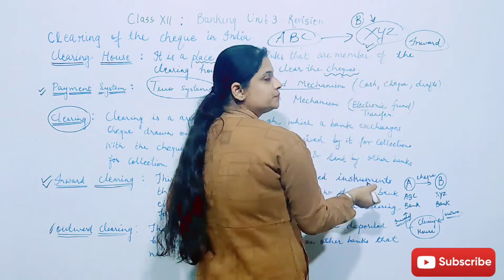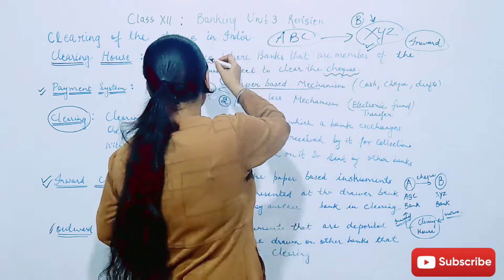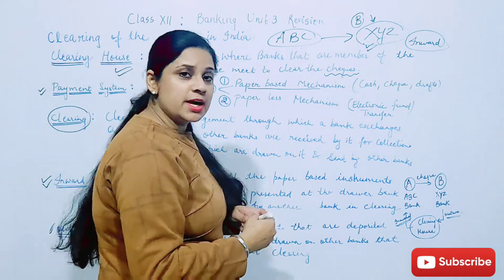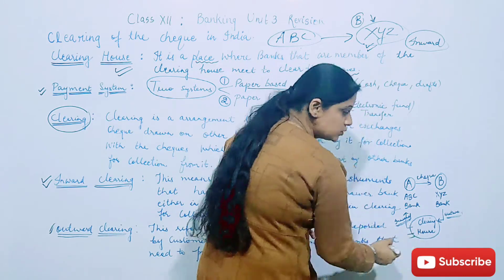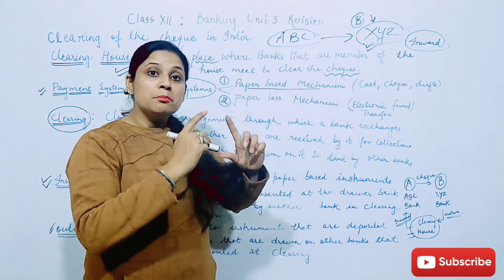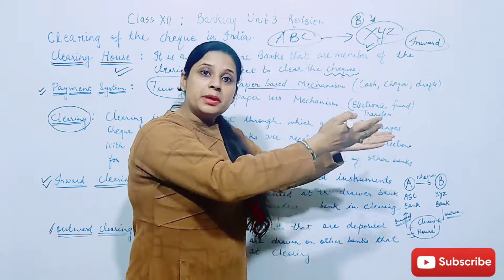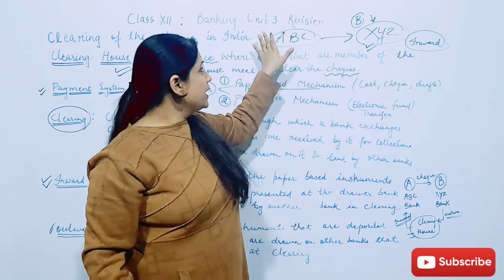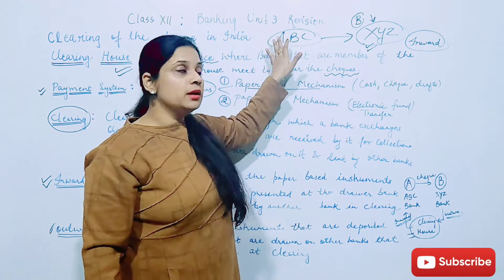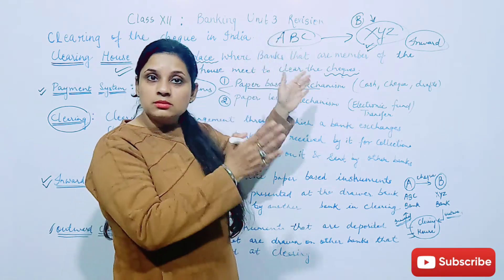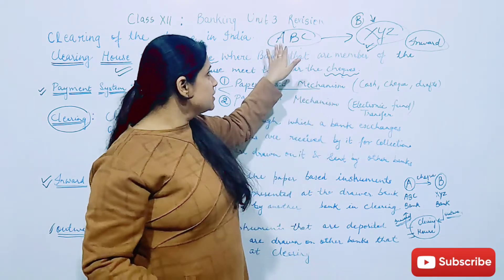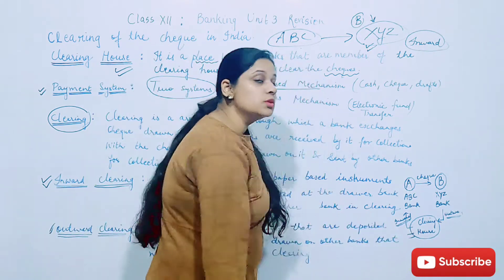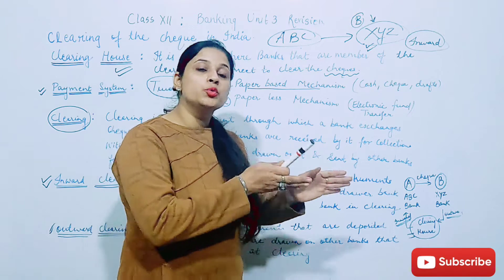Now what will XYZ bank do? He will send it to the clearing house. Clearing house, then what will happen? He is sending it out for the payment which has to be brought from ABC bank, because actually check kis account ka hai? ABC bank checkbook ka. So when he wants to clear the payment from ABC with the help of clearing house, we will say outward clearing.